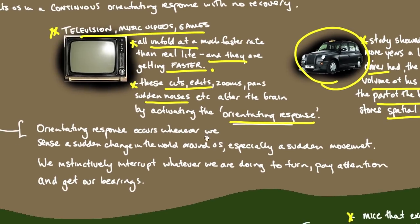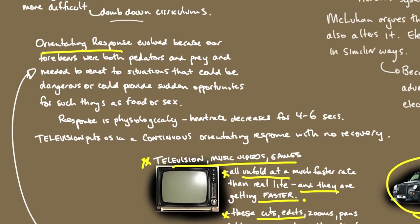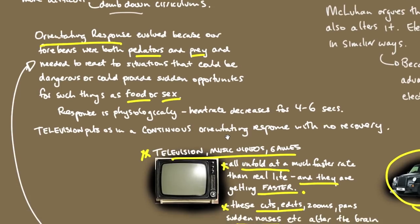Orientating response occurs whenever we sense a sudden change in the world around us, especially a sudden movement. We instinctively interrupt whatever we're doing to turn, pay attention and get our bearings. It's an instinct. The orientating response evolved because our forebears were both predators and prey and needed to react to situations that could be dangerous or could provide sudden opportunities for such things as food and sex.